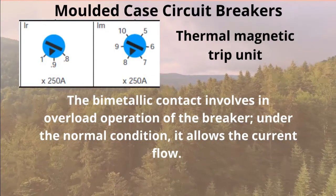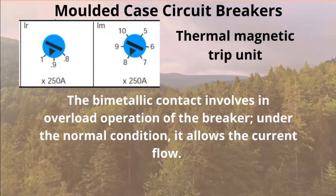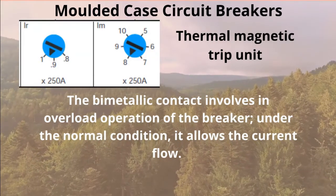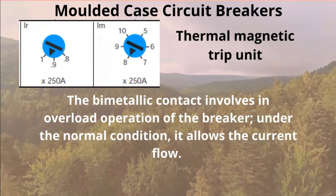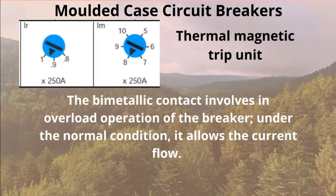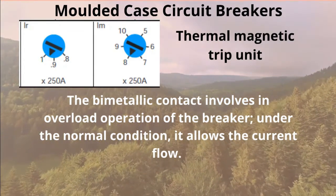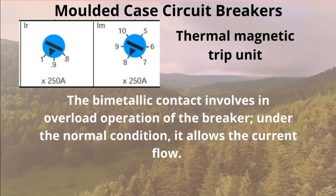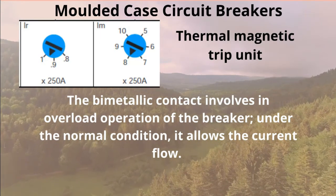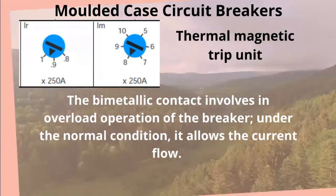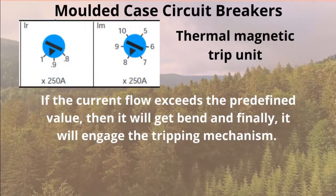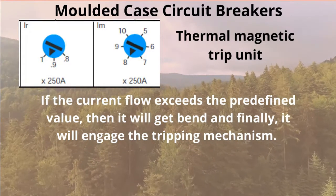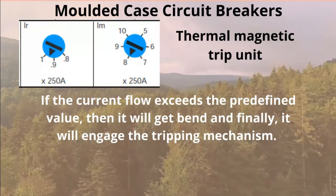The bimetallic contact is involved in overload operation of the breaker. Under normal conditions, it allows current flow. When overloaded, it will get bent and finally engage the tripping mechanism.